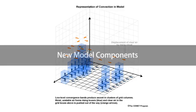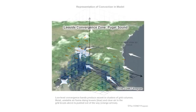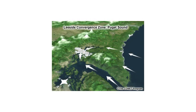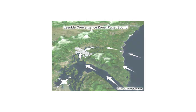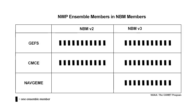New NWP components in the blend include several convection-allowing mesoscale models, plus more ensembles. The additional NWP models yield several benefits. The high-resolution models provide detail to blended forecast elements, particularly those influenced by convection or topography. Hourly forecast cycles for three of the new components facilitate hourly updates for nowcasts and short-range forecasts. Additional ensemble members enhance probabilistic forecasts.